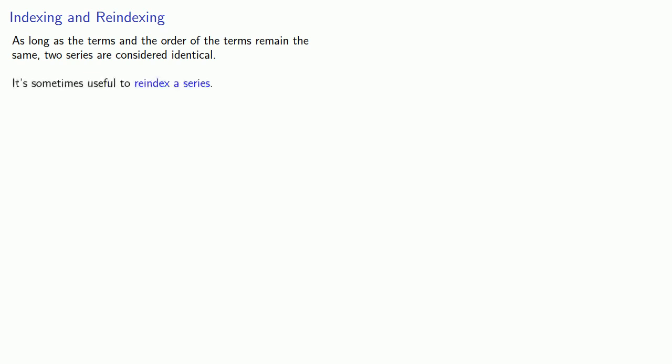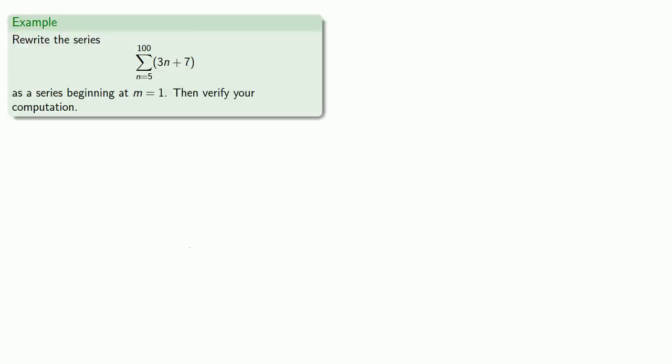And because of this, it's sometimes useful to re-index a series. What does that mean? Well, consider a series like this, where our index starts with n equals 5 and ends with n equals 100. We would like to rewrite this as a series beginning at index m equals 1. And in general, it's always a good idea to verify that we have the same thing.